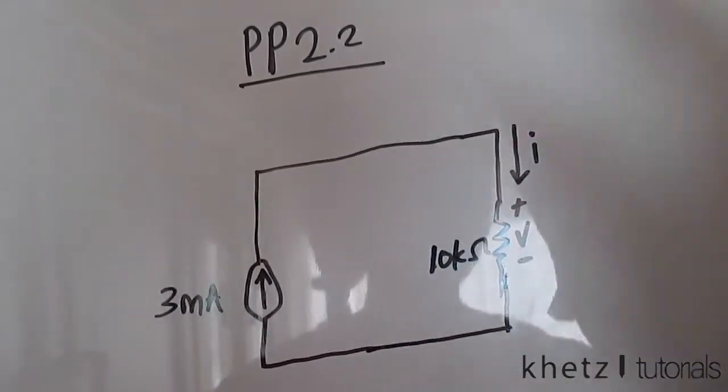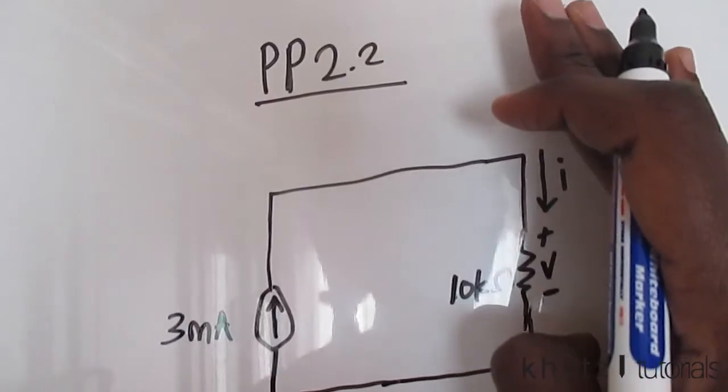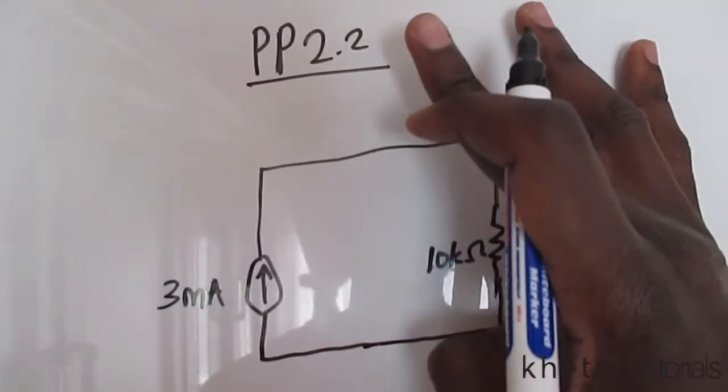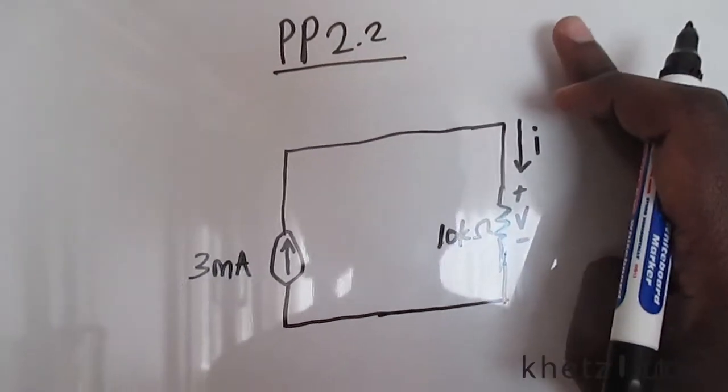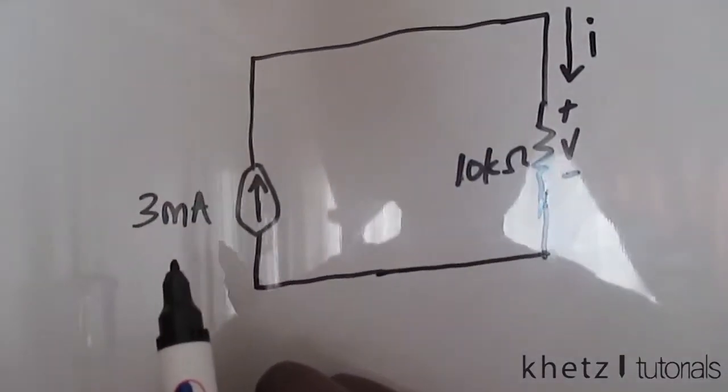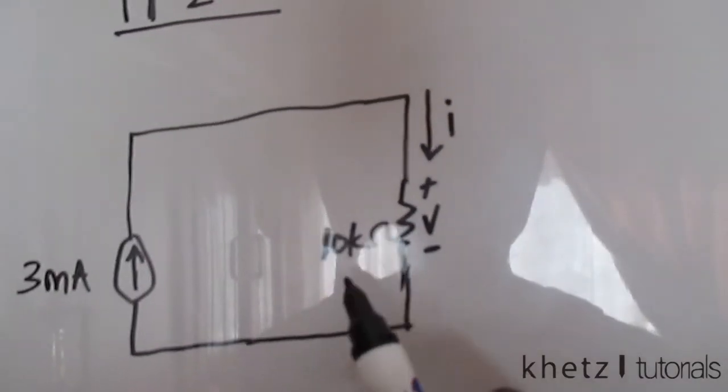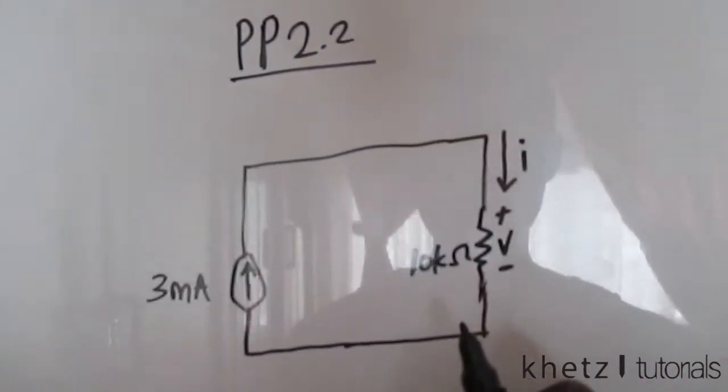Welcome to Kat's Tutorials. In this video we're going to be doing practice problem 2.2. So we have a current source of 3 milliamperes and a resistance of 10 kiloohms, and we are asked to find the voltage, the conductance, and the power associated with this resistive element.